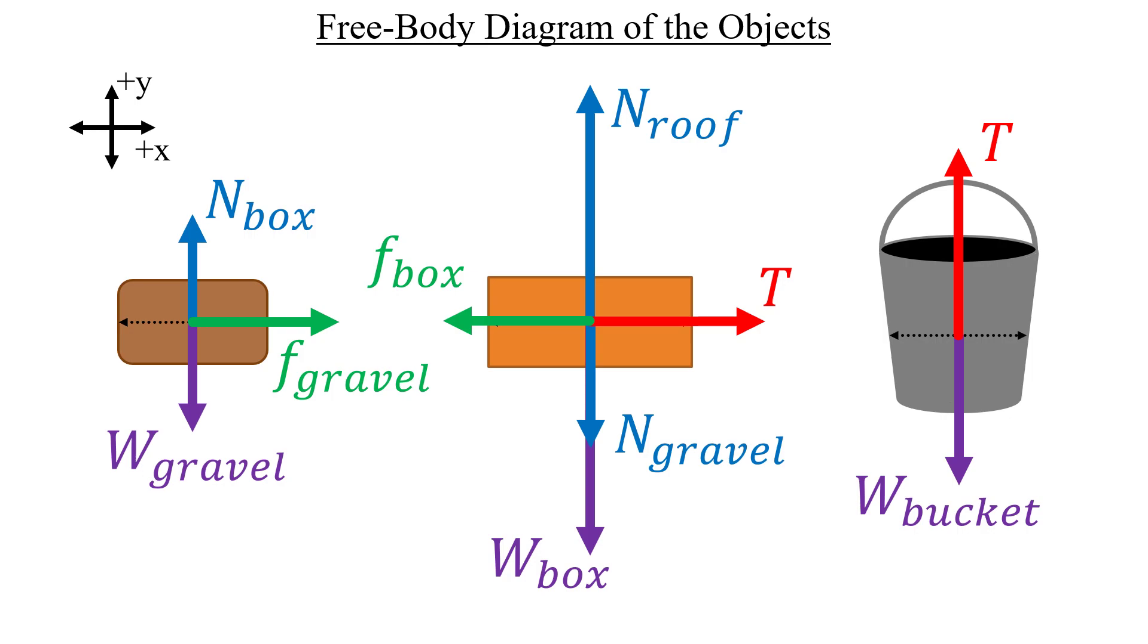The issue is that we have no idea whether we're dealing with kinetic friction or static friction in this part. Part B says that the system starts from rest once a worker removes the gravel, but that doesn't mean that we can automatically assume that the objects are stationary in Part A. Maybe they're not. So the question is, does the system accelerate? Here's how we can figure it out.